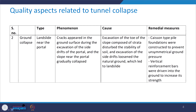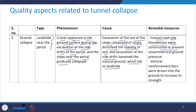The second type of ground collapse includes the landslide near the portal. In this case, cracks appeared in the ground surface during the excavation of the side drift of the portal and the slope near the portal gradually collapsed. The cause was the excavation of the toe of the slope composed of disturbed strata, and the excavation of the side drifts loosened the natural ground resulting in the landslide. The remedial measure adopted was that casein type pile foundations were constructed to prevent unsymmetrical ground pressure, and vertical reinforcement bars were driven into the ground to increase its strength.